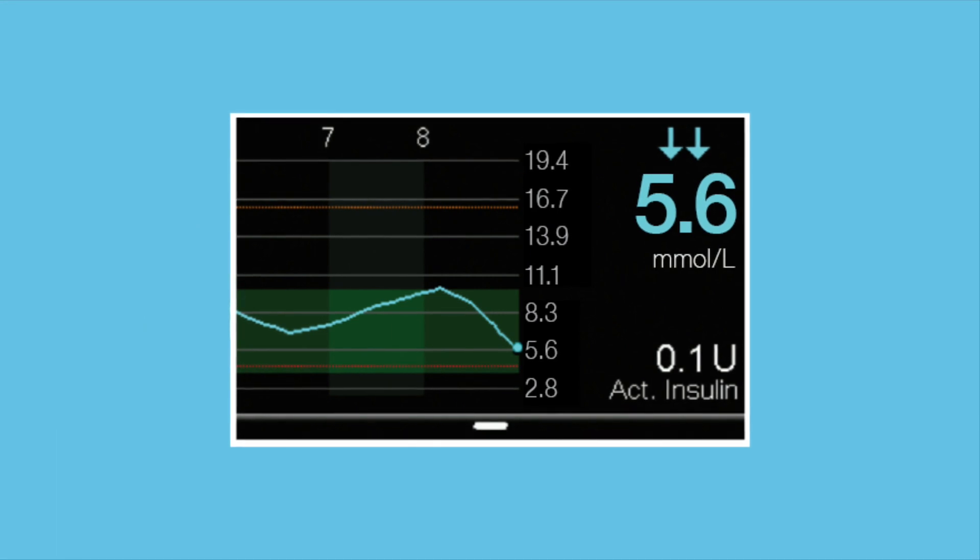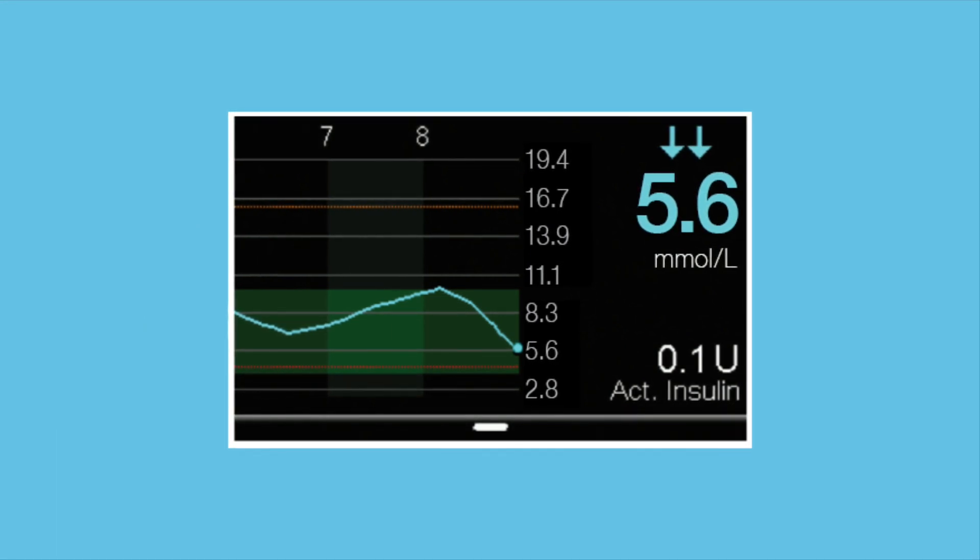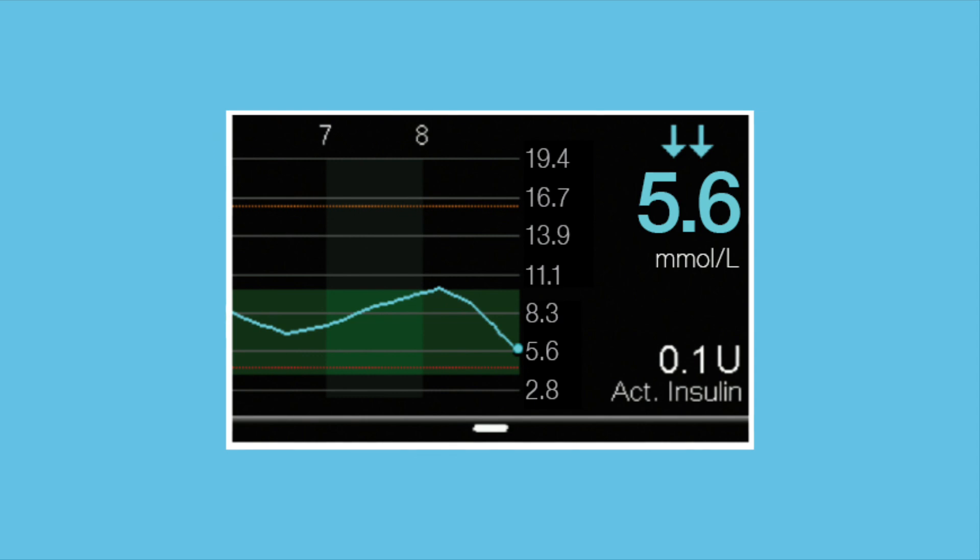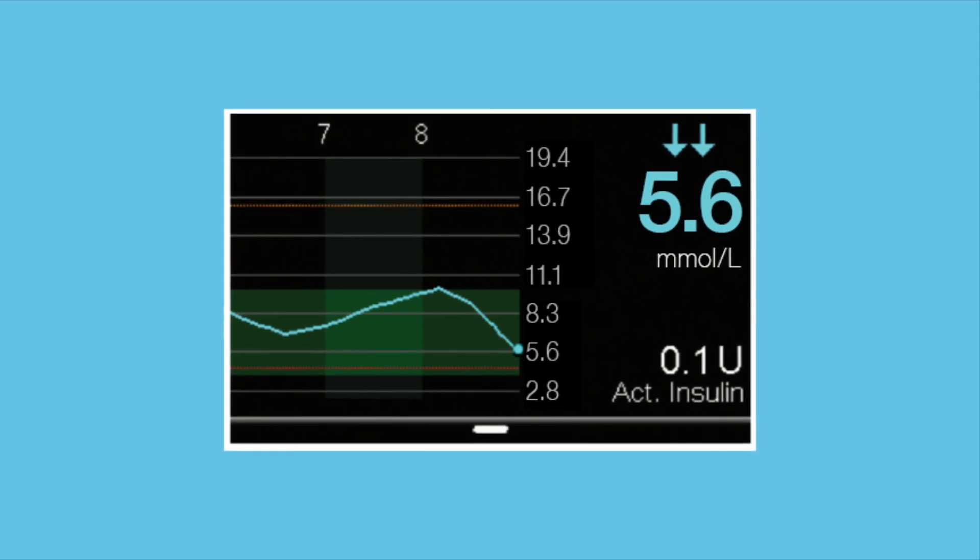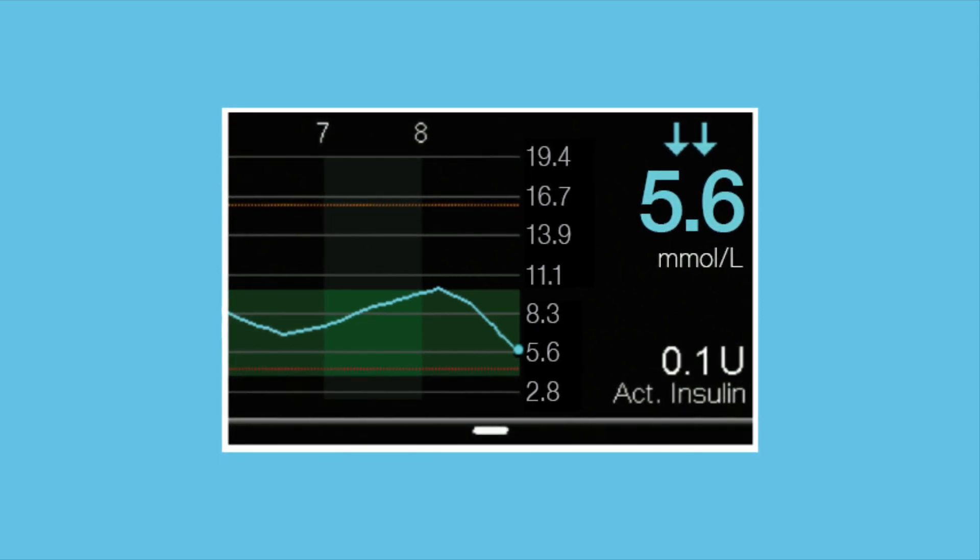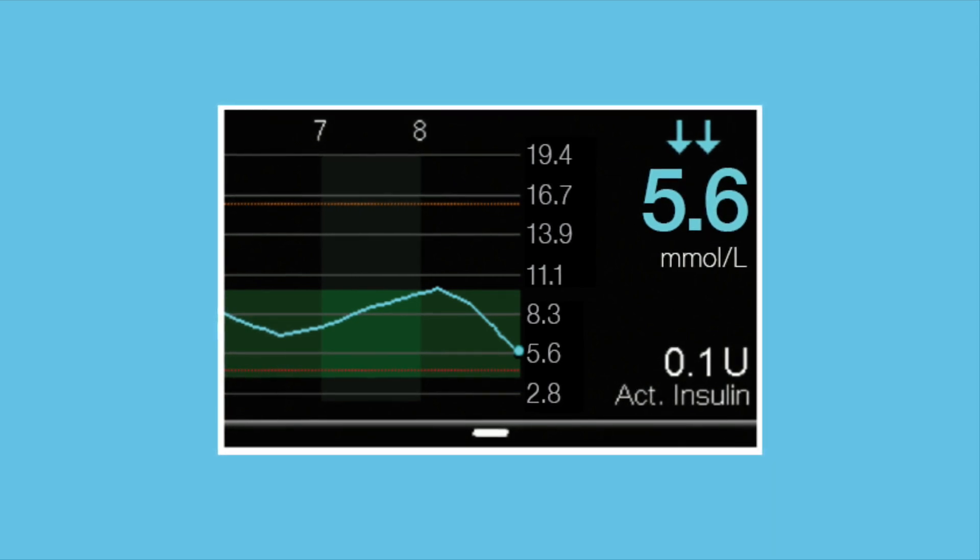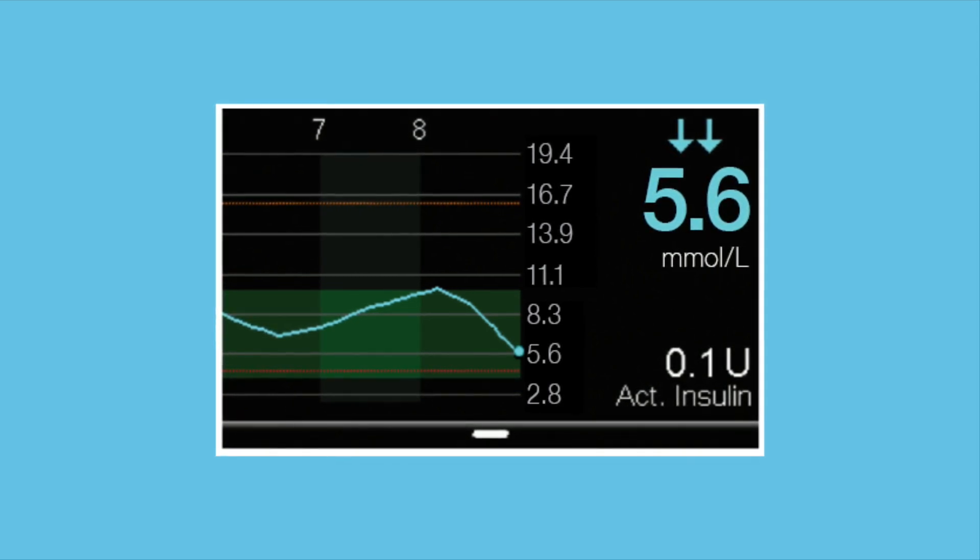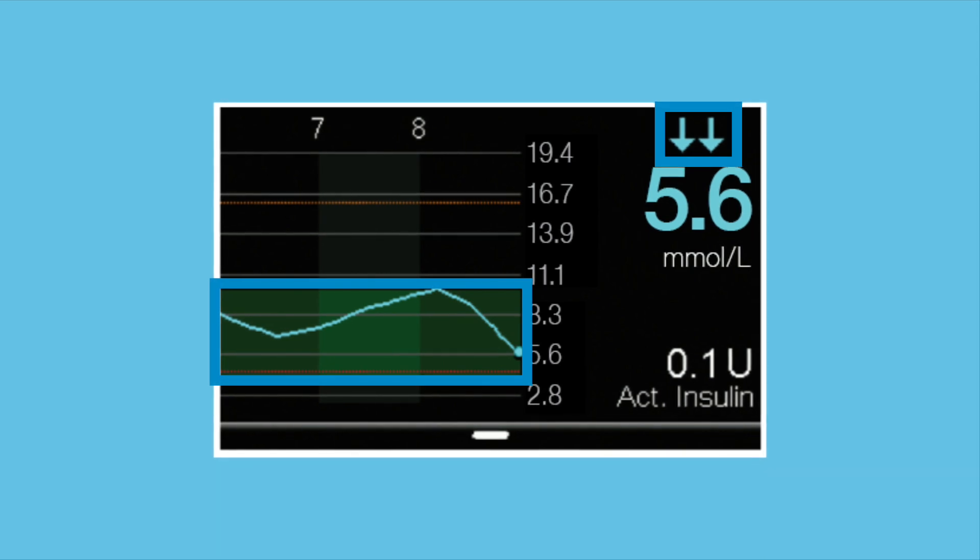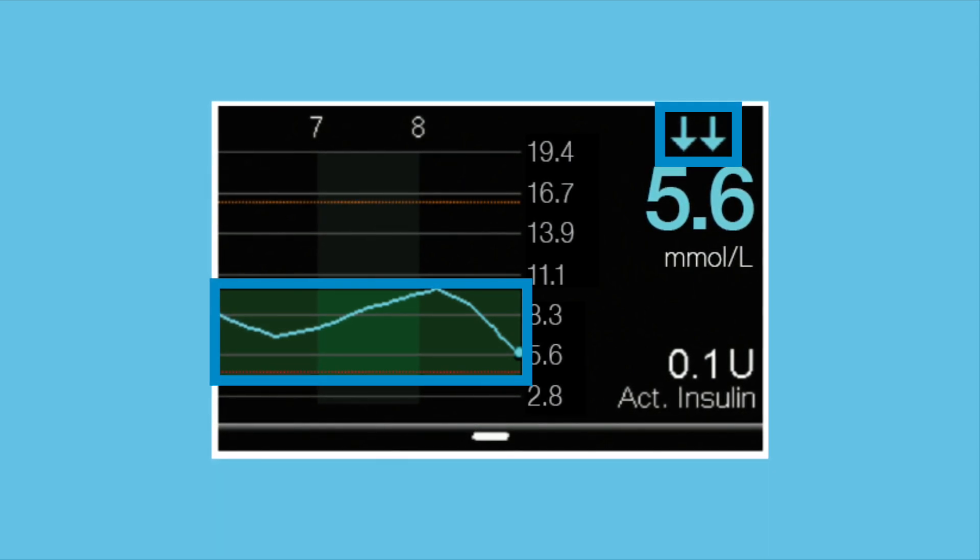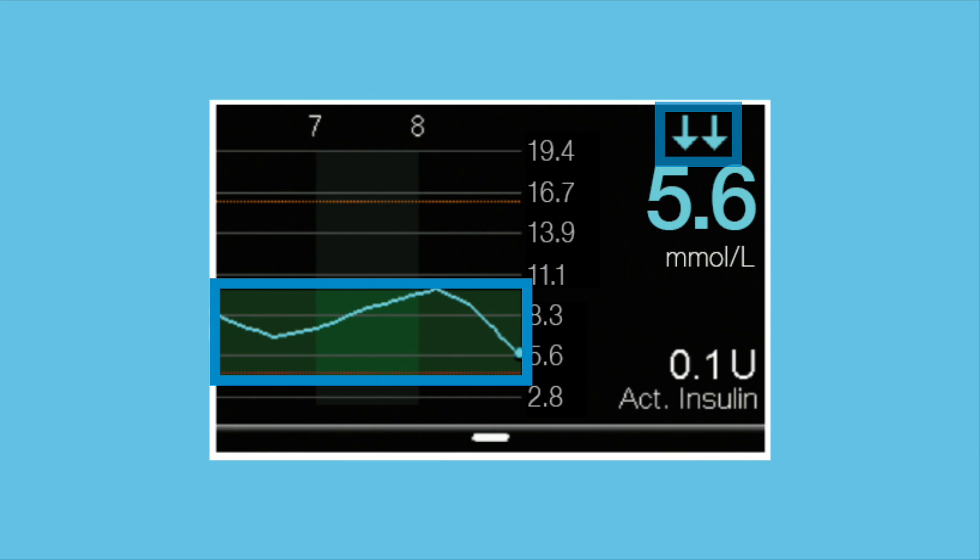Since using CGM provides so much more glucose information, the focus is more about sensor glucose trends, the direction, and the speed that glucose is changing, rather than each glucose number. Is glucose going up rapidly or coming down slowly? The pump shows this information as a sensor graph and trend arrows.